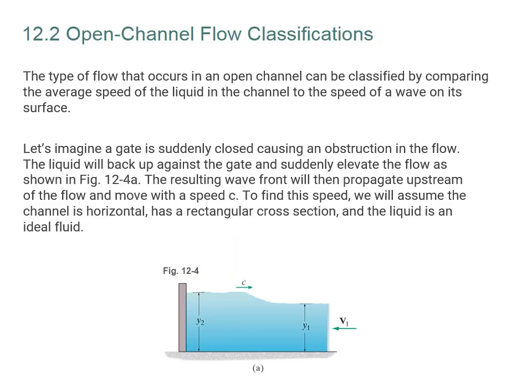The type of flow in an open channel can be classified by comparing the average speed of the liquid to the speed of a wave on its surface. Imagine a liquid flowing from right to left, and we place an obstacle in the flow — for example, we close a gate. The liquid will suddenly back up against the gate and elevate the flow. The resulting wave front will then propagate back upstream to the right, moving with speed C. Our goal is to find this speed.